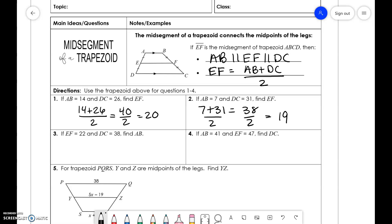Now, we do the opposite. We're told EF is 22, and we need to find what AB is. If we remember AB plus DC divided by 2, 44 equals X plus 38. Subtract 38, we get X equals 6. Same thing here, 47 equals 41 plus X over 2. We get 94 equals 41 plus X. X equals 53.